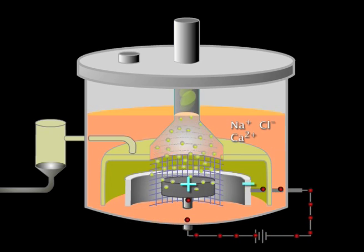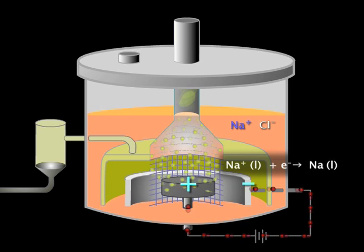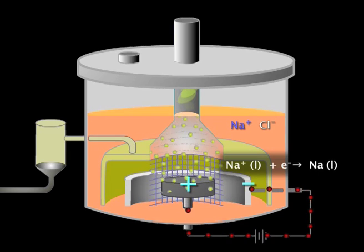At the cathode, electrons from the power supply are forced onto the most reactive cations, the sodium ions. Here's the half equation for the reduction of sodium ions to liquid sodium metal.